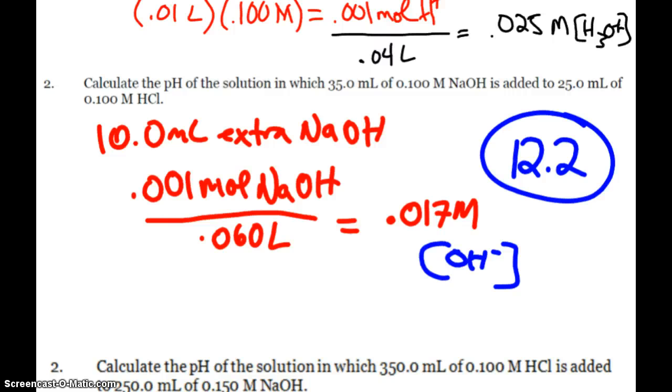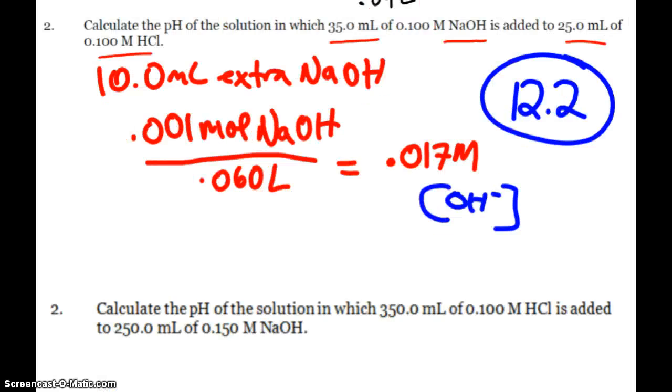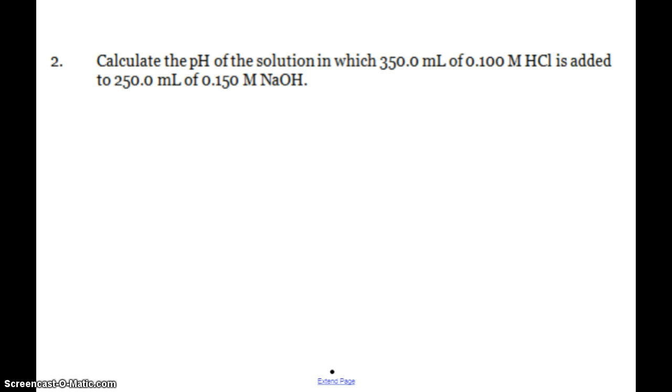Hopefully you found that the pH is 12.2, because again, it should make sense in our head, 35 mL of the NaOH, 25 mL of the hydrochloric acid. So there was more base this time, and so we expect a higher pH. Now, both of those scenarios had the same molarity. It's not on your practice paper that I gave you, but just in case you get a situation where we have different molarity. So in this situation, my hydrochloric acid is 0.1 molar.